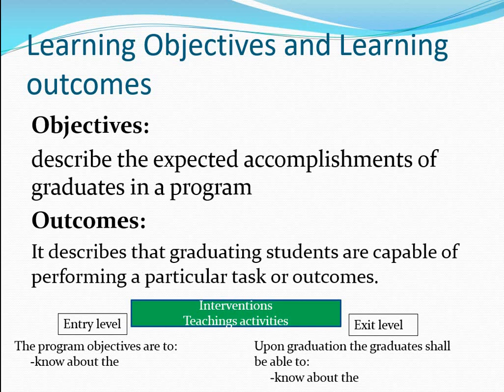Before we go into detail: learning objectives usually describe the expected accomplishment of graduates in a particular program, whereas outcomes describe what graduating students are capable of performing — a particular task or outcome. This is the main difference between objectives and outcomes.